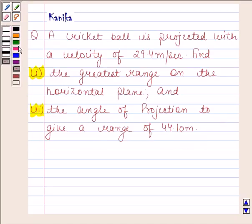Let us now begin with the solution. We are given that the cricket ball is projected with a velocity of 29.4 meters per second. That means the initial velocity u equals 29.4 meters per second.